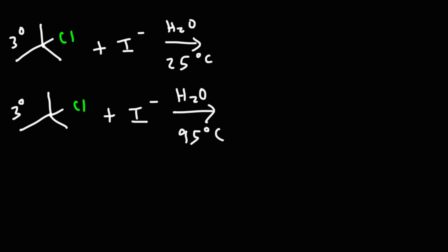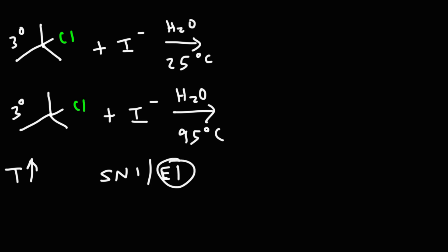So what we're going to get is a mixture of the SN1 and E1 reactions. We have a tertiary alkyl halide, a decent nucleophile, and a weak base which is the solvent. Now what you need to understand is that as we increase the temperature, we're going to get more of the E1 reaction. So as the temperature goes up, the yield of the E1 reaction increases and the yield of the SN1 reaction decreases.